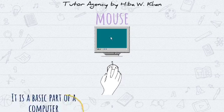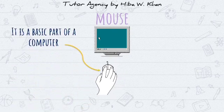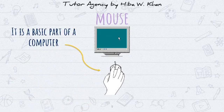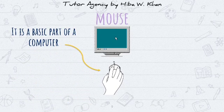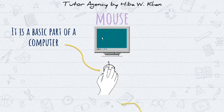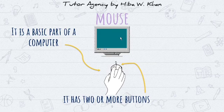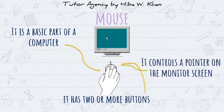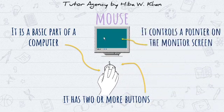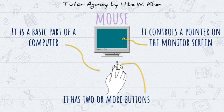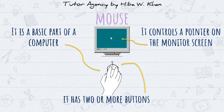Mouse. A mouse is another basic part of a computer. It has two or more buttons, and it controls a pointer on the monitor screen.